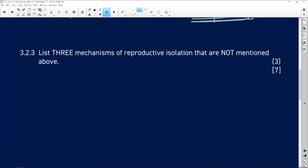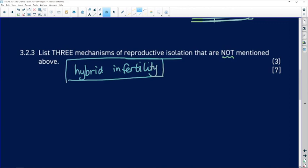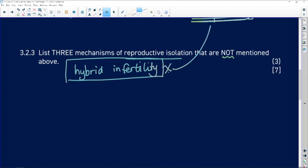Now it says list three mechanisms of reproductive isolation that are not mentioned above. So hybrid infertility is what we mentioned above, that the hybrid is infertile. And so there can be no Samango vervet hybrids produced from a Samango vervet hybrid. But we're not allowed to mention that one because that one is mentioned in the example that we've done. We've got to mention three other mechanisms.